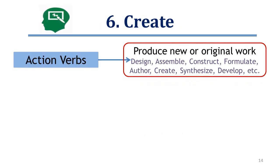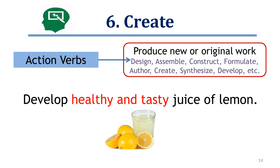The last and most critical level of thinking is create — the ability to put parts together to develop or create a new thing. For example: develop a healthy and tasty juice from lemon. Action verbs that help to create more thinking in students include design, assemble, construct, formulate, and develop.